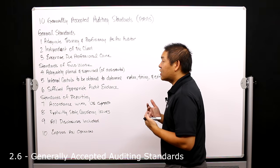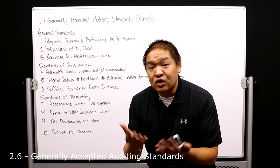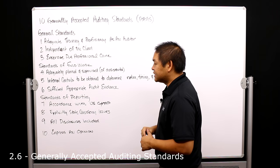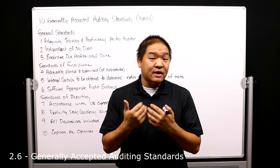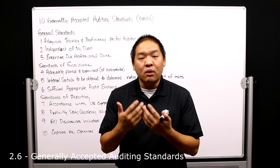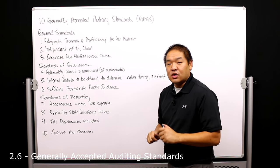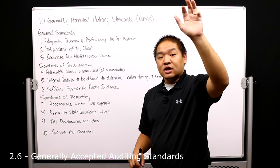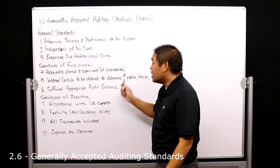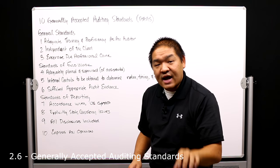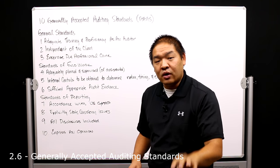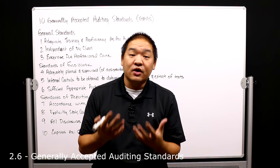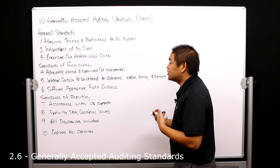The next section is the Standards of Fieldwork — things we must be thinking about and doing during the fieldwork section of the audit. The first fieldwork standard is to adequately plan and supervise all of our assistants. We must adequately plan the audit so we know what the outcomes are and what we're doing, and we need to supervise our assistants. In the firm hierarchy — staff, seniors, managers, partners — the partner must supervise all assistants, and the senior in charge should supervise the staff member. Everybody must be adequately supervised to ensure the work is done correctly.